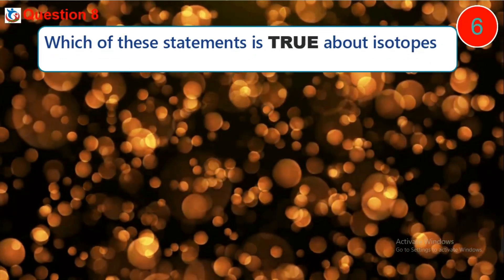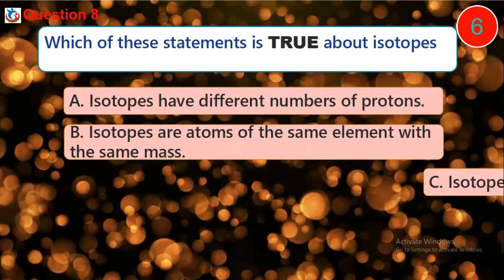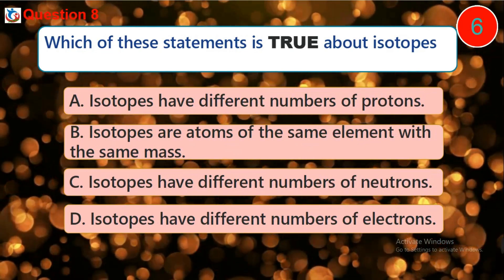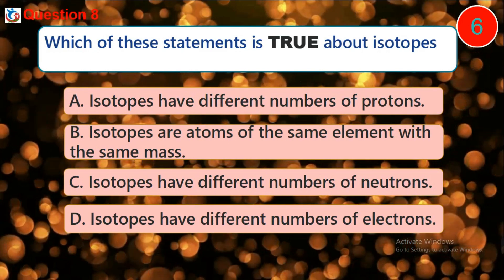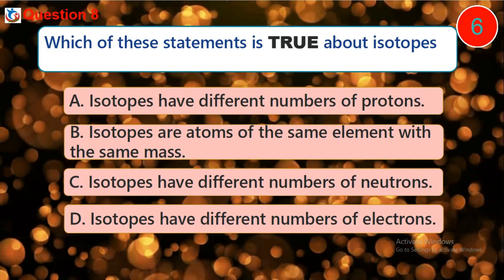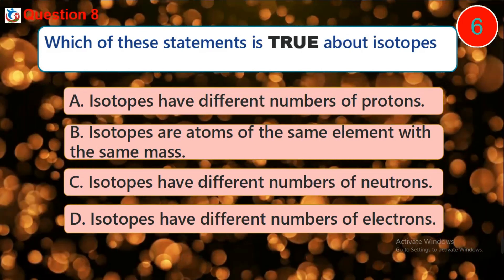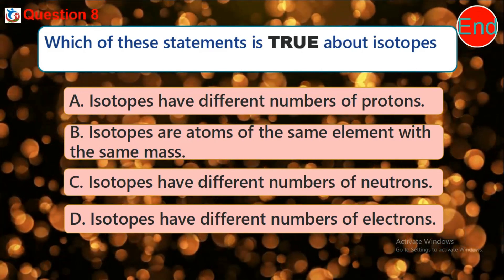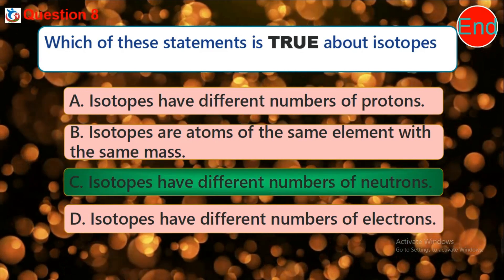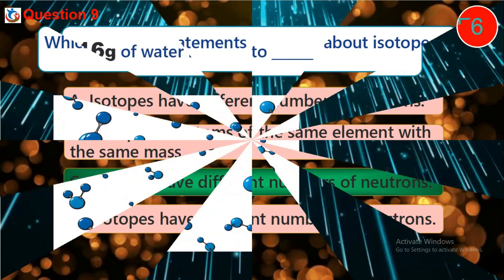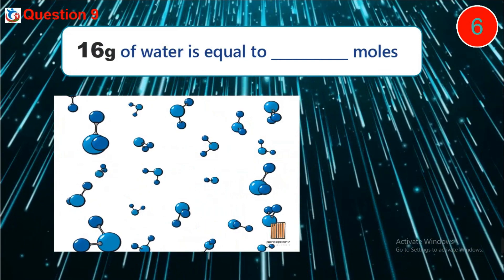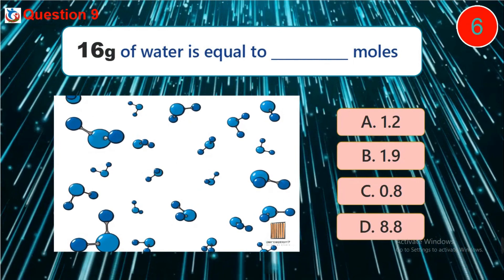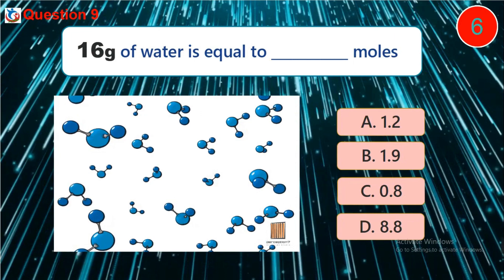Question 8: Which of these statements is true about isotopes? A) Isotopes have different numbers of protons. B) Isotopes are atoms of the same element with the same mass. C) Isotopes have different numbers of neutrons. D) Isotopes have different numbers of electrons. Question 9: 16 grams of water is equal to dash moles. A) 1.2, B) 1.9, C) 0.8, D) 8.8.